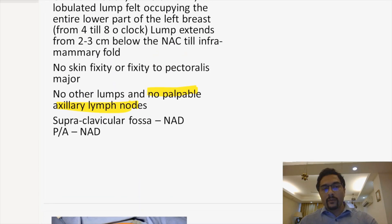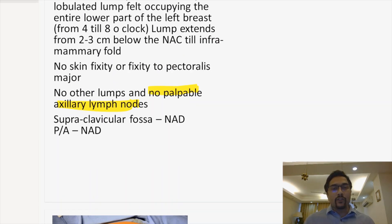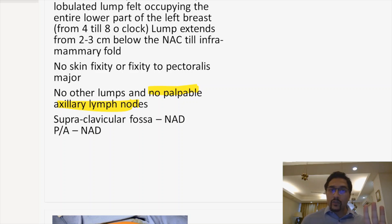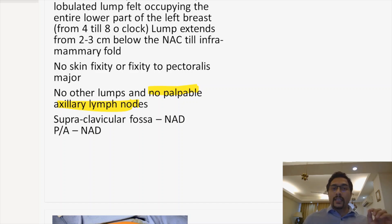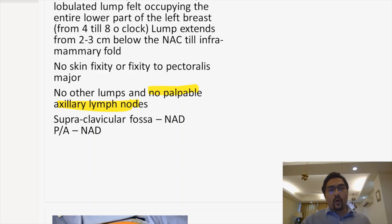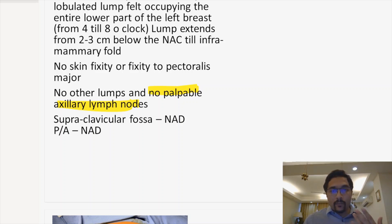A very important thing: whenever you are examining a patient with a breast lump, always tell the examiner that you examine the patient in sitting position and in a semi-recumbent or lying down position. In a sitting position, you can see if the lump is fixed to the chest wall. If you ask the patient to bend forward and the lump does not fall, that means it is fixed to the chest wall.